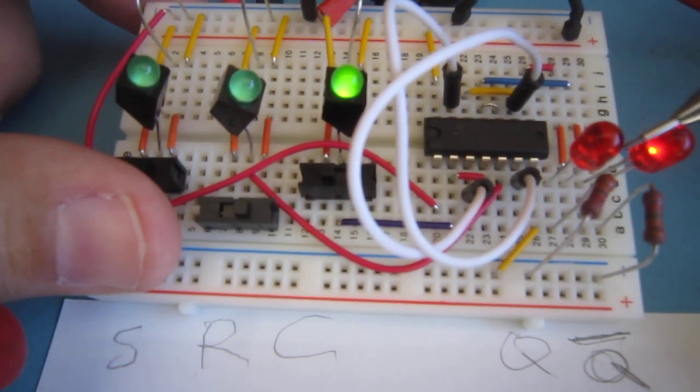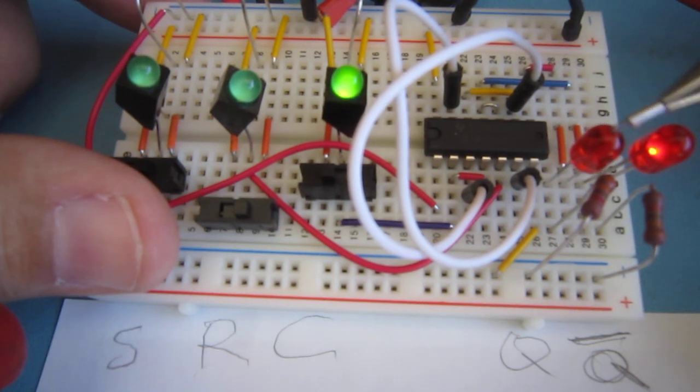On the right hand side here you see the output. There's Q and not Q. Right now the bit is off. You can just look at this LED here for off and on.